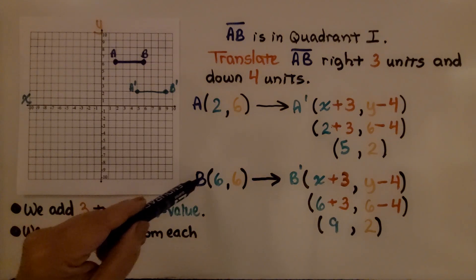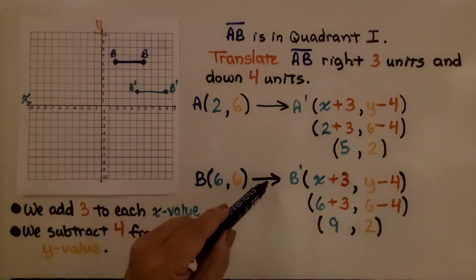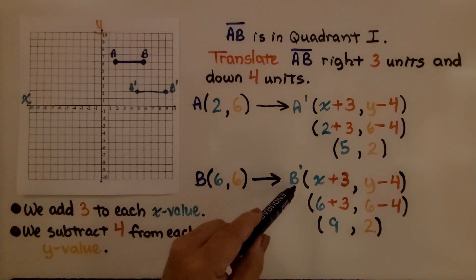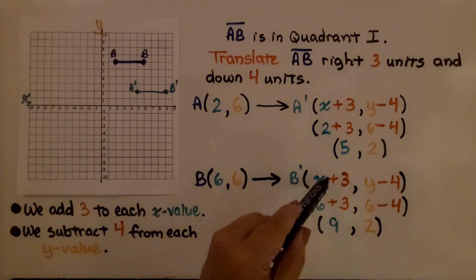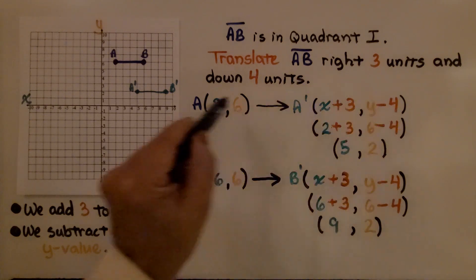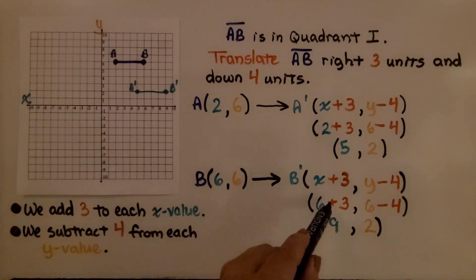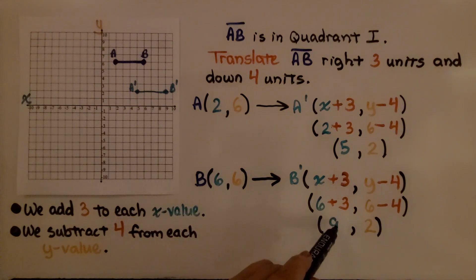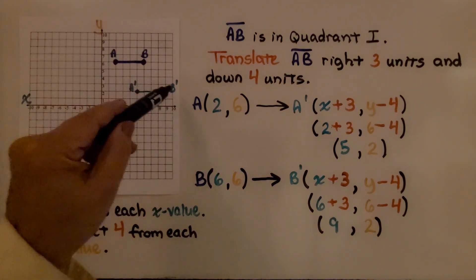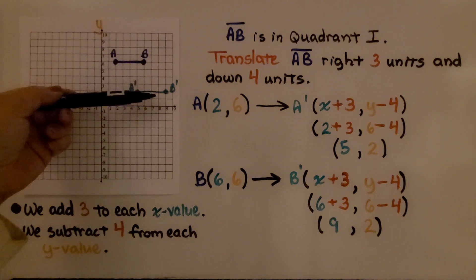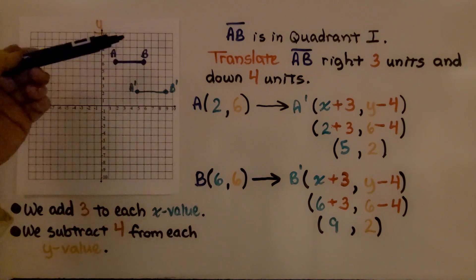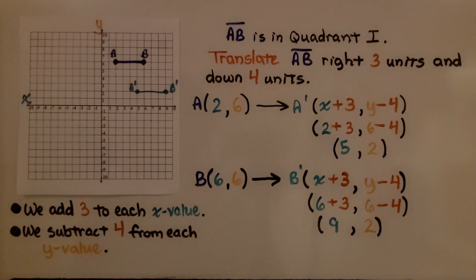For point B, which is at (6, 6), it will translate to B prime using the same rule: x plus three, y minus four. Six plus three gives nine, and six minus four gives two, so B prime is at (9, 2). We draw a line segment between A prime and B prime, and we have translated segment AB right three units and down four units — adding three to each x value and subtracting four from each y value.